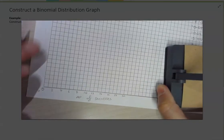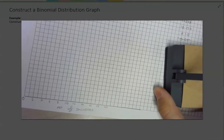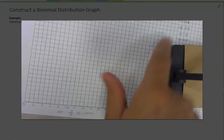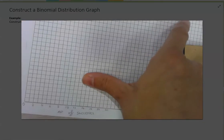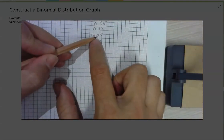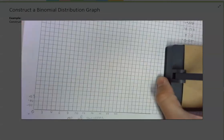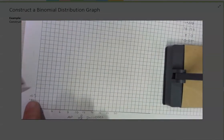So let's think about what an appropriate scale might be if the largest value I have is 0.2. So if I go up in say 0.01, let's try that. So 0.01, 0.02, 0.03, 0.04.